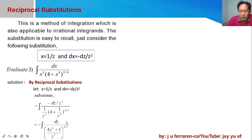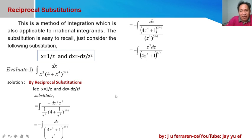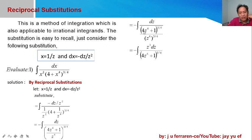By the law of exponents, we raise the numerator and denominator separately to the power of three-fourths. We get (4z³ + 1)^(3/4) in the numerator and z³ raised to the three-fourths in the denominator. Simplifying, z cubed can be brought up together with the differential dz, giving us z³ dz in the numerator and (4z⁴ + 1)^(3/4) in the denominator.